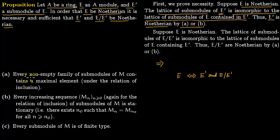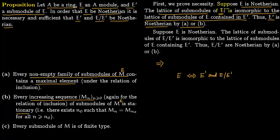Condition A states that every non-empty family of submodules of E contains a maximal element. So whatever lattice you take in E prime, it will have the same maximal element contained within E. Equivalently, every increasing sequence of submodules of E under inclusion is stationary. Since the lattice of submodules of E prime is isomorphic to that of E contained within E prime, the same applies.